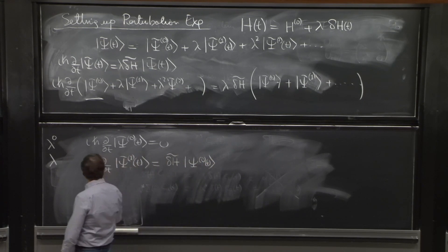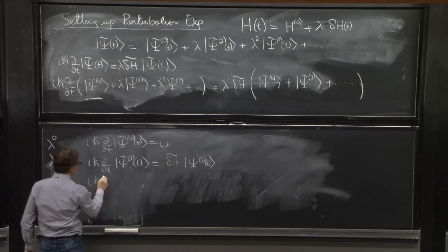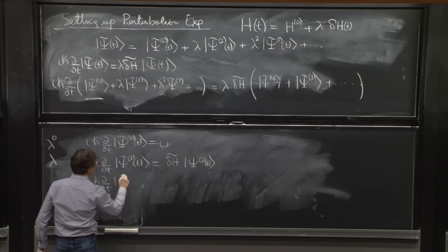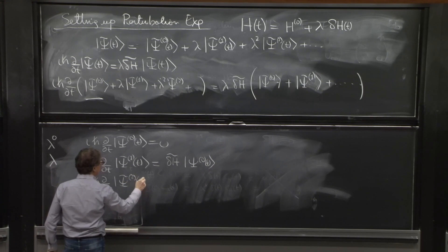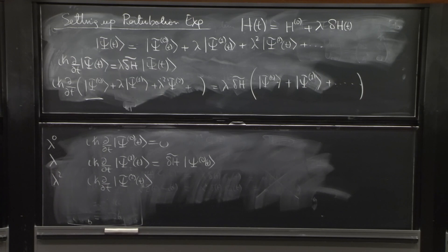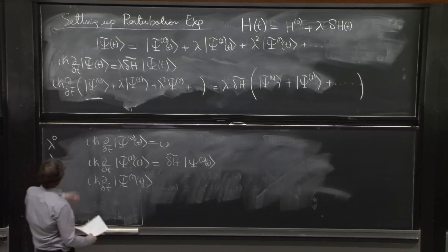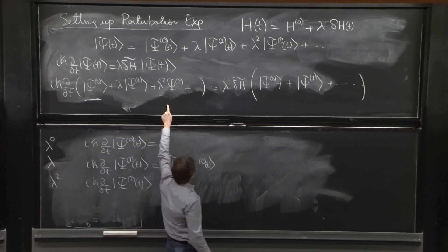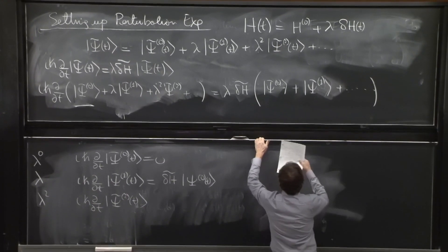And the next one, i h bar d dt of psi 2 of t, that's lambda squared, comes from the derivative acting here. We have to look for lambda squared here.